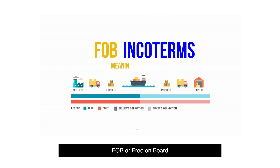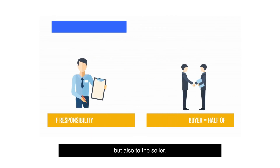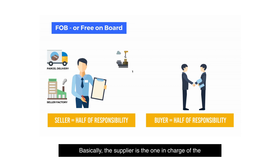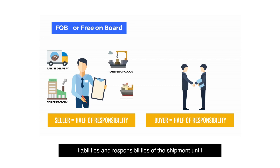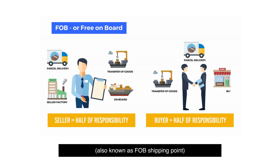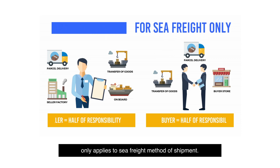FOB, or Free On Board, is the most common mode of arrangement in shipping, since this type is deemed to be fair not only to the buyer, but also to the seller. Basically, the supplier is the one in charge of the liabilities and responsibilities of the shipment until it leaves the dock to be shipped from China to the U.S., also known as an FOB shipping point. And the buyer takes the liabilities and responsibilities of the shipment when it reaches the dock of destination. However, take note that this type of agreement only applies to sea freight method of shipment.